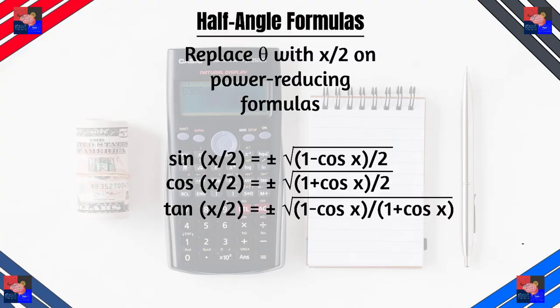Now let's look at our last type of formula: the half angle formula. It's sort of like the double angle formula, but the concept is that it is half of a given angle that is preferably on the unit circle. We replace θ with x/2 in the power reducing formula and solve for sine(x/2), getting plus or minus the square root of (1 − cos x)/2.